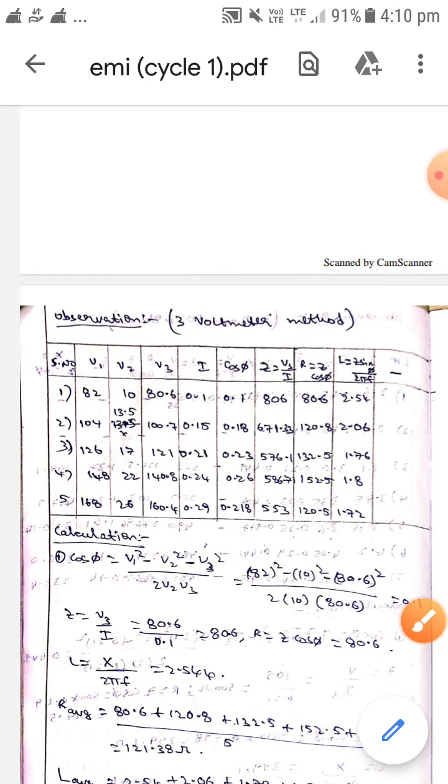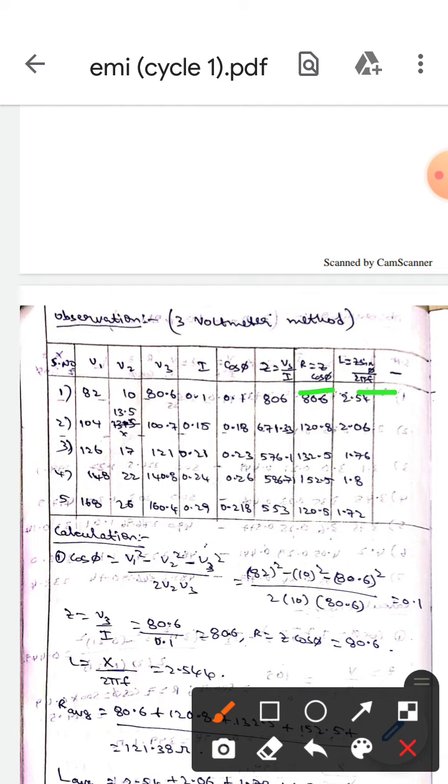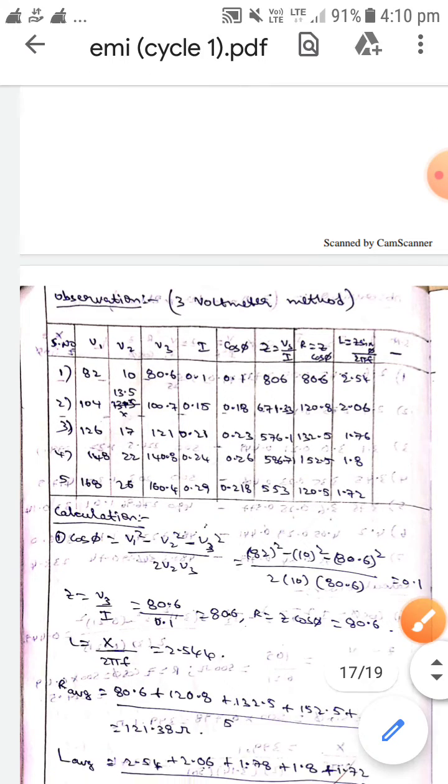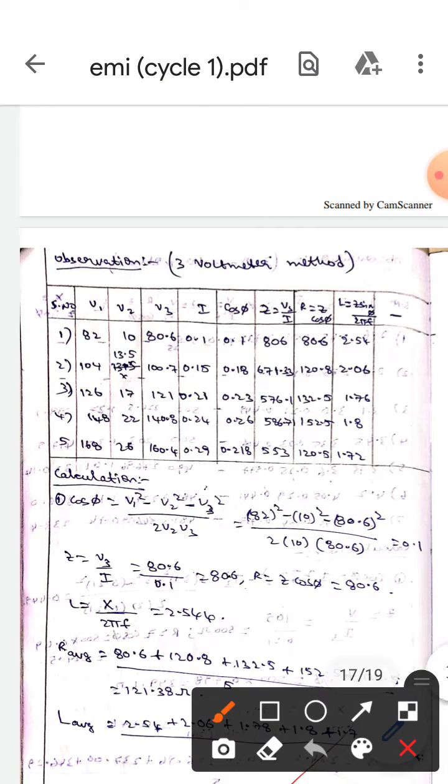L equals Z sin phi by 2πf. Here for finding the cos phi we will use the formula: V1 squared minus V2 squared minus V3 squared by 2V2V3. In this way we will find the cos phi.